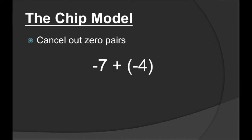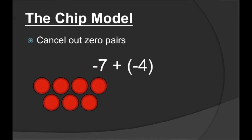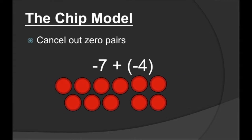How about another example? If we have negative seven plus negative four, this is a little bit different because we don't have one positive and one negative integer — we have both negative integers. Negative seven is just seven red chips, and negative four would be four red chips. There's nothing to cancel out because we don't have red and black. We just have red, so we combine them. Seven red chips and four red chips gives us 11 red chips, making our answer negative 11.